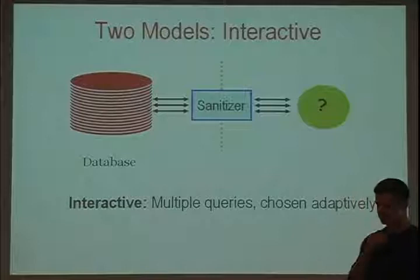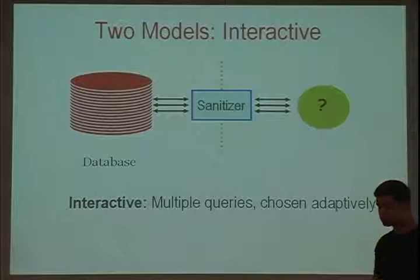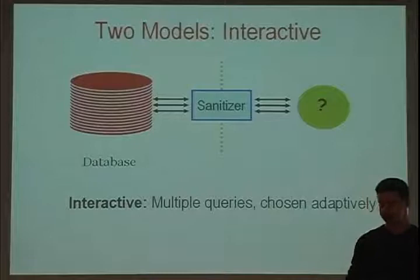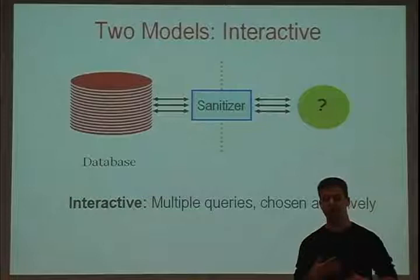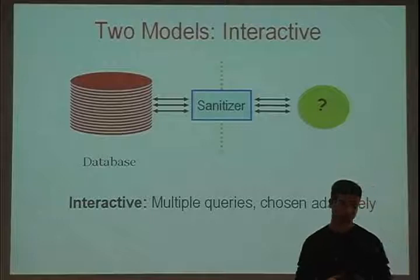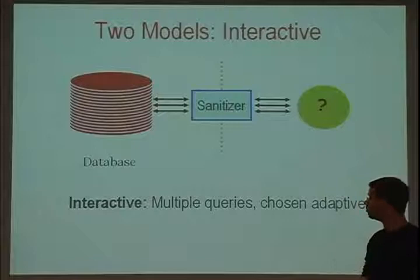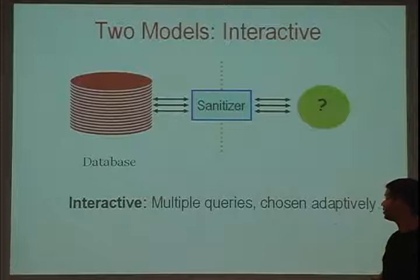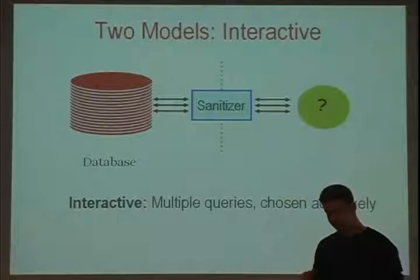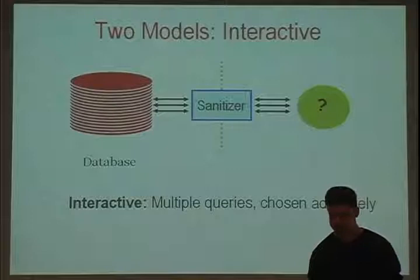In terms of the model, there are actually two models considered in the privacy-preserving data analysis literature. The main model that's been considered is the interactive model: a database of sensitive information, a sanitizer who owns and can look at it, and users who come along and ask questions. The sanitizer computes a privacy-preserving answer and gives it back. The user adaptively chooses the next question — this goes on and on. The total number of queries that can be asked is usually bounded globally to avoid privacy breaches. I won't talk about this model today.